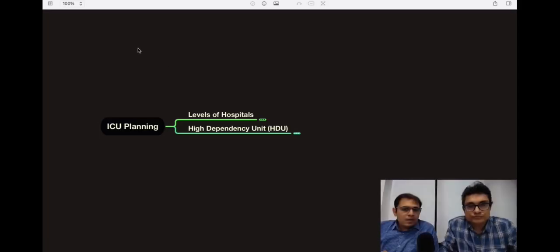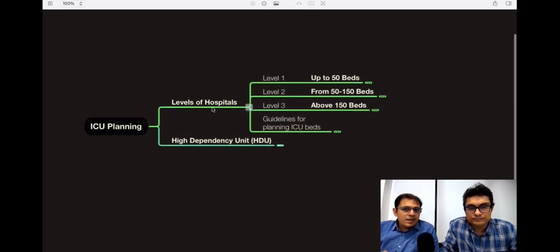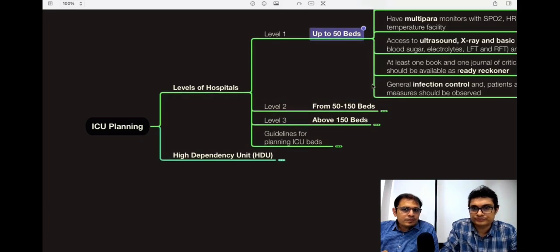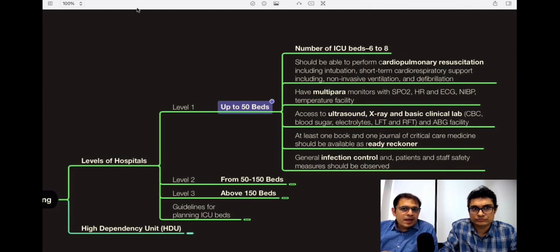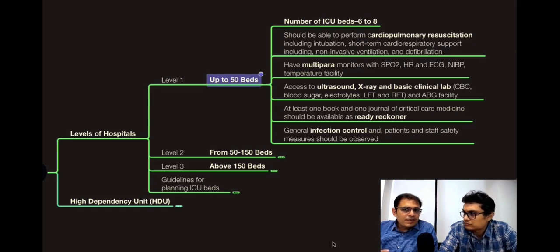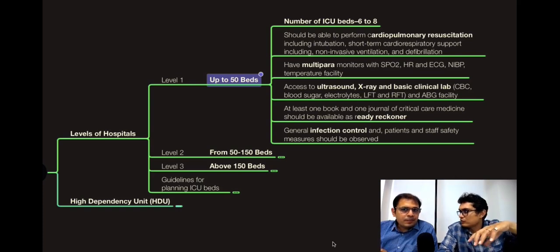There are various levels of hospitals as far as ICU beds are concerned: level one, level two, and level three. Level one is up to 50 beds. In this range, the ICU should have at least 6 to 8 beds, and you should be able to perform CPR, intubation, non-invasive ventilation, and defibrillation. A multi-parameter monitor with saturation, heart rate, ECG, IBP, and temperature is required, along with access to ultrasound, X-ray, and a basic clinical lab.